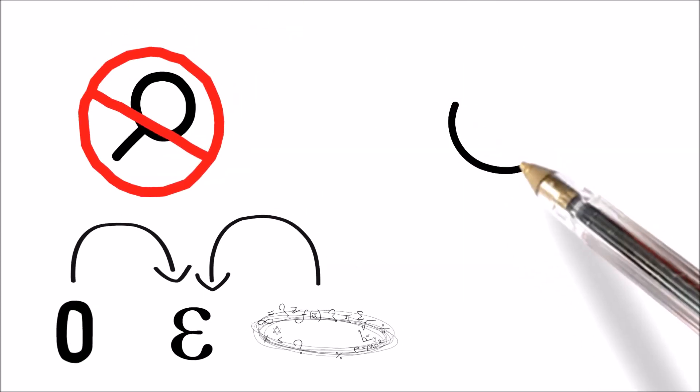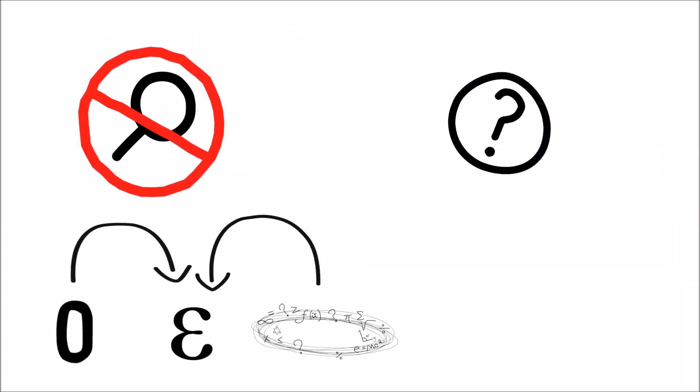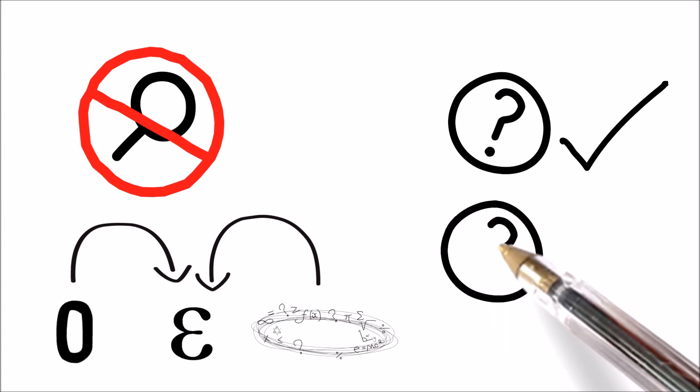Infinitesimals answer a lot of questions, like why 0.999 repeating forever equals 1. They are also used in the majority of calculus and explain thousands of paradoxes. But they also raise a lot of questions.